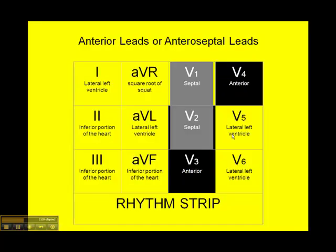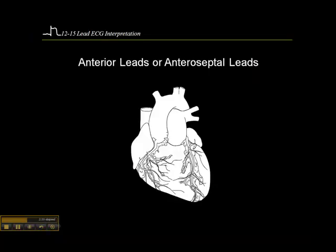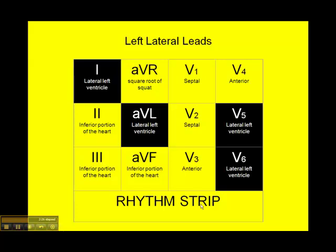These are the anterior septal leads. V1 and V2 are considered septal leads representing the intraventricular septum. V3 and V4 are considered anterior leads. In order to say definitively that you have an anterior wall MI, there must be ST elevation in V3 and V4. If you see it in all four leads, we call it an anterior septal wall infarct — involving both the septum and the anterior wall. This territory is fed by the left anterior descending coronary artery, the LAD.